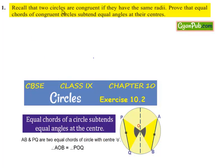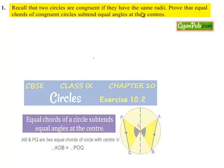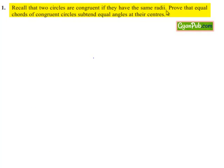Moving on to question number 1. Recall that two circles are congruent if they have the same radii. Prove that equal chords of congruent circles subtend equal angles at their centers.